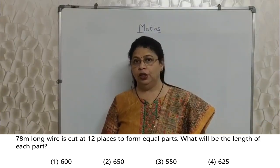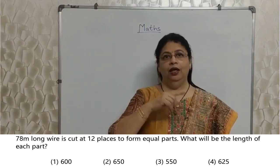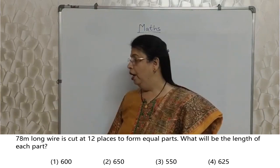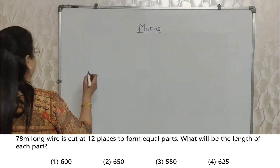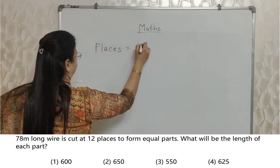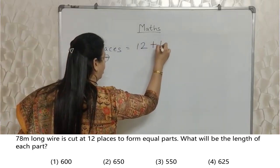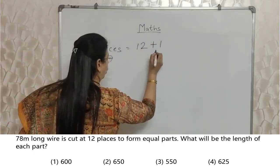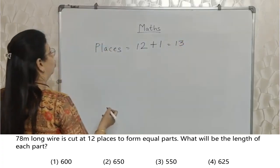In this type of questions, 2 words mein se ek word ane wala hai - Places, nahi toh pieces. Here kya aya hai? Places. Whenever they use the word places, whatever number they have given, you must add 1. If you don't add 1 to this number and make it 13, 2 marks gaye.